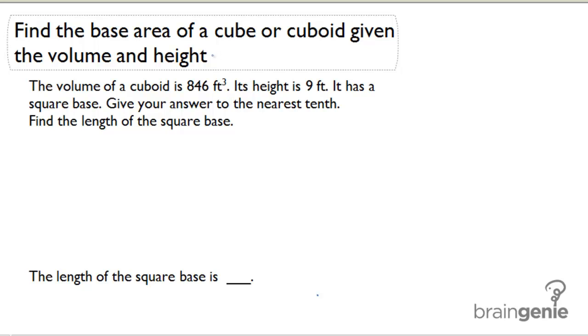So the first thing we need to do is figure out what the base area is. I'm going to set up that formula V equals capital B times H, and I'm going to substitute what I know. I know that the volume is 846 because it told me that in the problem, and I know the height is 9 feet. If I divide both sides by 9, I get that the base area is 94 square feet.